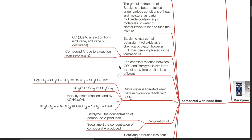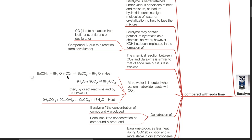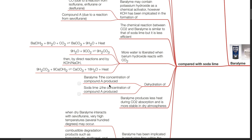The chemical reaction between CO2 and baralime is similar to that of soda lime, but it is less efficient. More water is liberated when barium hydroxide reacts with CO2. The equation is: Ba(OH)2·8H2O + CO2 ⇌ BaCO3 + 9H2O + heat; 9H2O + 9CO2 ⇌ 9H2CO3; then 9H2CO3 + 9Ca(OH)2 ⇌ 9CaCO3 + 18H2O + heat. Dehydration of baralime increases the concentration of compound A produced, whereas dehydration of soda lime decreases it. Baralime produces less heat during CO2 absorption and is more stable in dry atmospheres.